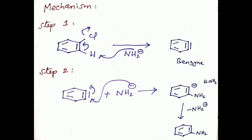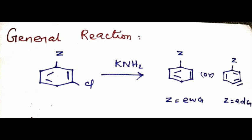The first step is an elimination process. In the second step, addition of the nucleophile NH2 minus gives the product — aminobenzene. This is the general reaction for the benzyne mechanism, where Z is the substituent. If Z is an electron withdrawing group such as NO2 or COOH, the ortho position hydrogen is removed.